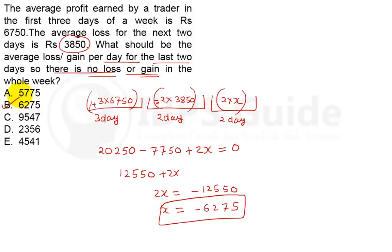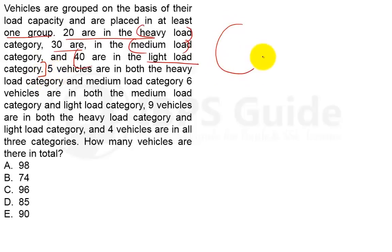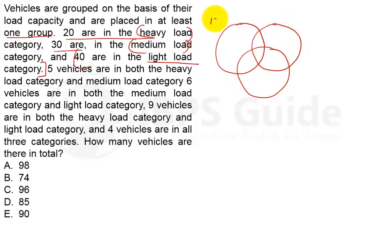Moving on to question number 2. Vehicles are grouped on the basis of their load capacity and placed in at least one group: 20 are in the heavy load group, 30 are in the medium load category, and 40 are in the light load category. So we draw a Venn diagram — a circle for heavy load with 20, a circle for medium load with 30, and a circle for light load with 40 vehicles.